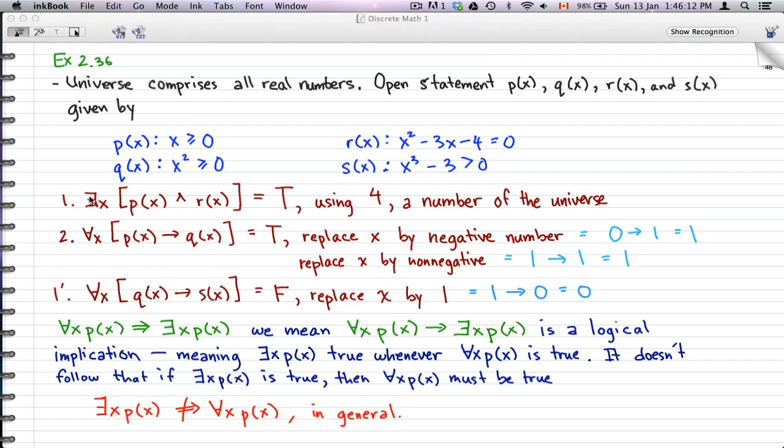Now, using these open statements, what we could do here is we could determine the validity of all these other statements with the following existential quantifiers attached. What I want to show you here is that using real numbers, for example, negative 4, 4, 1, 2, 3, using these real numbers, we can find out the validity of these arguments.